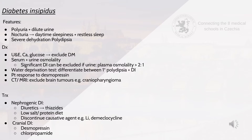Treatment for nephrogenic DI includes diuretics like thiazides, a low salt and protein diet, and discontinuation of causative agents such as lithium or demeclocycline. For cranial DI, chlorpropamide or desmopressin can be given.